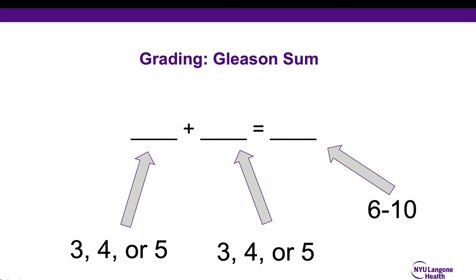Many prostate tumors, however, have heterogeneity or a mixture of different grades of cancer within the tumor. Therefore, a Gleason sum is commonly used to give an overall score or degree of aggressiveness. For example, a tumor which consists of Gleason grade three and three would give you a score of six. You can see that this tumor contains both Gleason grade three and grade four components, giving it a Gleason sum of seven.